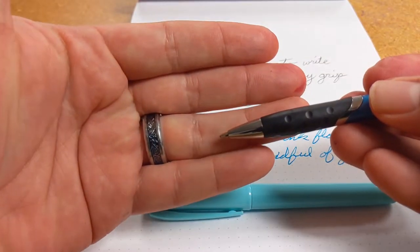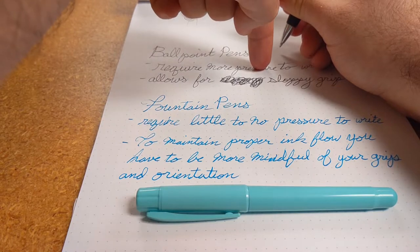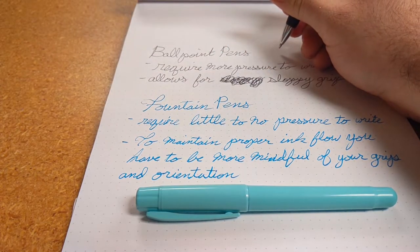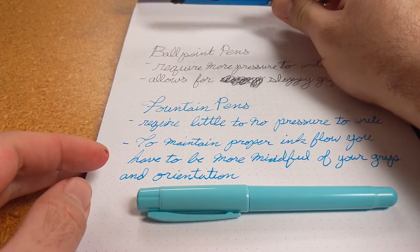The main one being the reduction in hand fatigue. Ballpoint pens use a thicker ink with a tiny ball at the tip of the pen which relies on downward pressure to maintain the friction needed to keep the ball rolling.